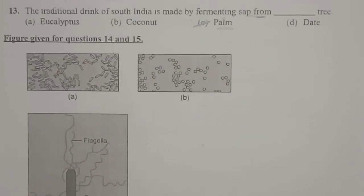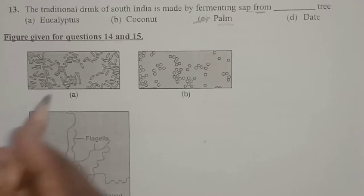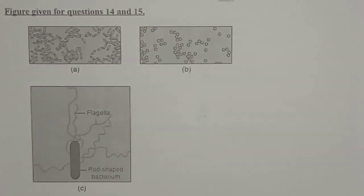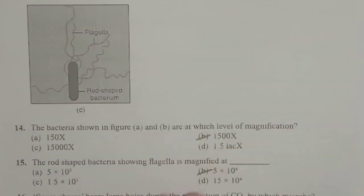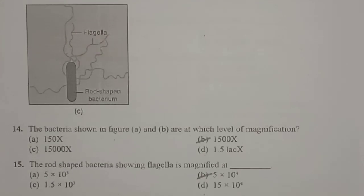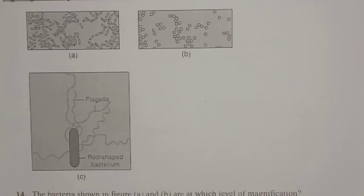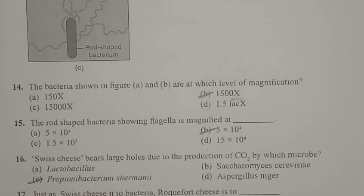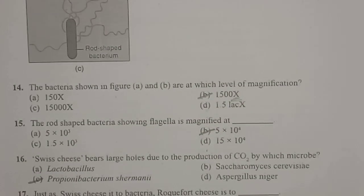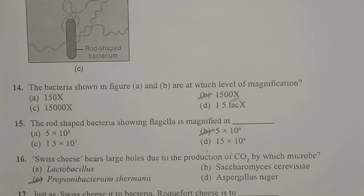The next questions are related to diagrams A, B, and C. The question asks: the bacteria shown in figures A and B are at which level of magnification? Microbes are best visible under the electron microscope. The microbes in diagrams A and B are magnified at 1500x. In your laboratory you use 10x, 45x, and 100x. These diagrams A and B are magnified at 1500x. When we say 10x, it means 10 times larger than the original; at 45x, it is 45 times larger.